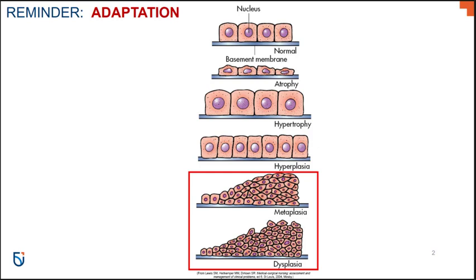I pulled this slide from our first lecture just to remind you of the different types of adaptation that exist, because parts of adaptation are relevant to cervical cancer or the development of cervical cancer. This is a drawn image of cells and how they might look microscopically if we were to observe them within a tissue. In this first image, we have that normal layer of simple cuboidal epithelial tissue all lying on a basement membrane, and then we're going to show you what happens in different cases of adaptation to that layer of cells.